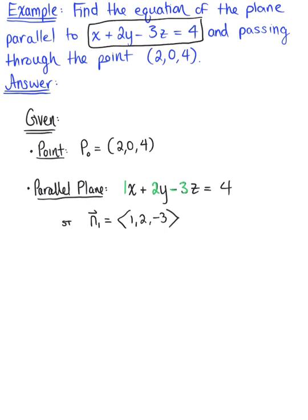Why is this normal vector important? Well, we know that two planes are parallel if their normal vectors are scalar multiples of each other — in other words, if the normal vector of the first plane is equal to a scalar multiple of the normal vector of the second plane.